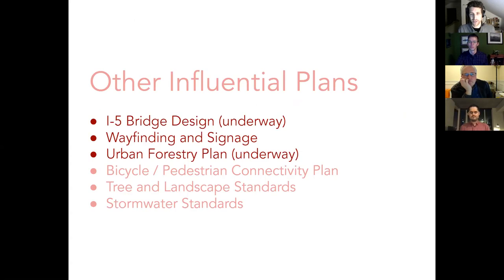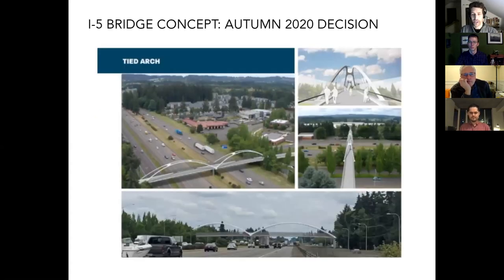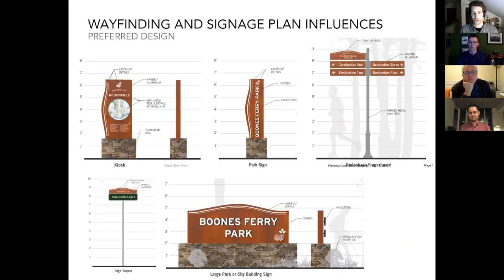We're also looking at other influential plans — some underway, some recently adopted. Those include the I-5 bridge concept, where there is a recommendation on the bridge's aesthetic and the plaza landing on the east side right in the town center. We want our materials and landscape and placemaking designs to be complementary of that I-5 bridge work. The wayfinding and signage plan has established a precedent for the use of stone, Corten, natural-looking metal and steel, establishing a modern natural aesthetic. You'll hear the phrase 'modern and natural' a lot.